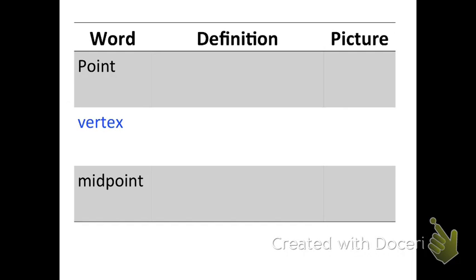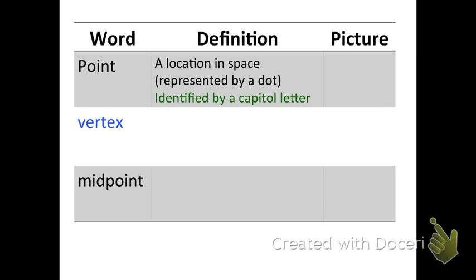The first three words are point, vertex, and midpoint. The definition of a point is a location in space represented by a dot. It's identified by a capital letter. So our picture is pretty simple. It's a dot with a capital letter A. You can put whatever letter you want. I just chose A. And that would be written as point A or said as point A.